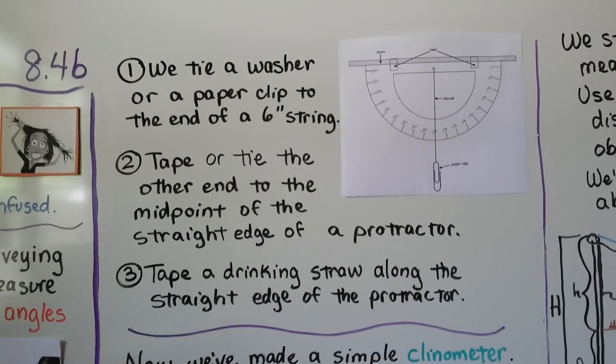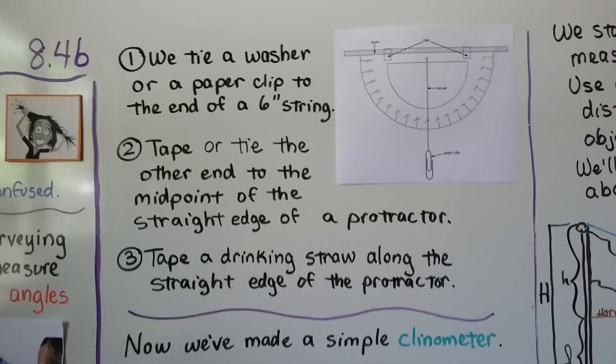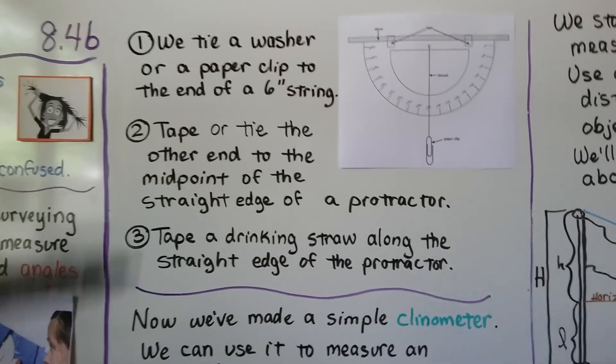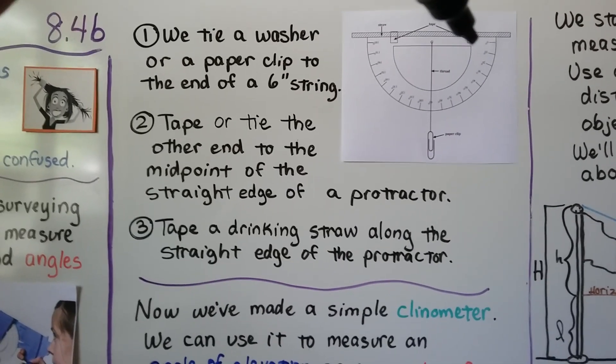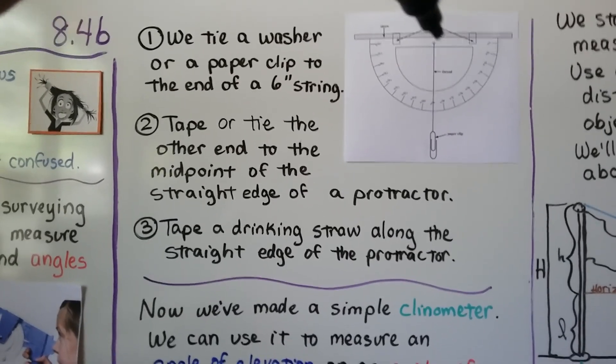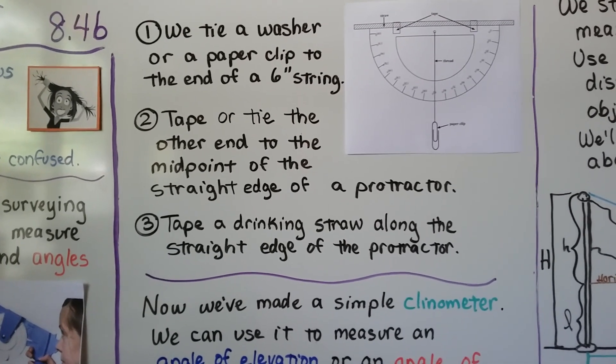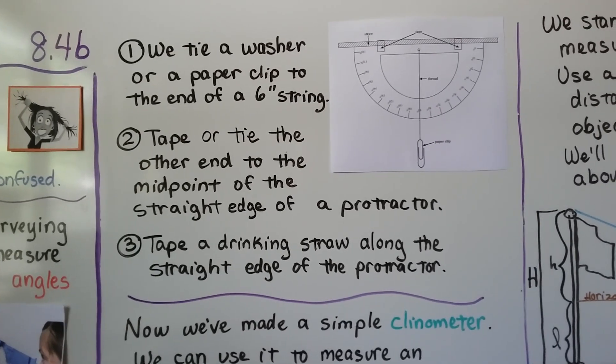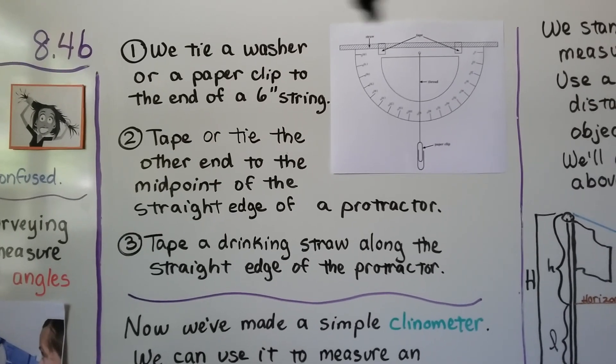We tie that washer or paper clip to the end of the six inch string. We tape or tie the other end to the midpoint of the straight edge of the protractor. You could put it through that little hole in the center. We tape a drinking straw along the straight edge of the protractor or that pen tube.